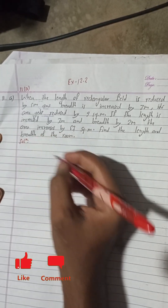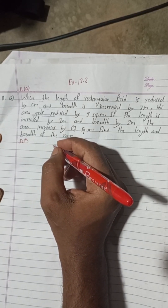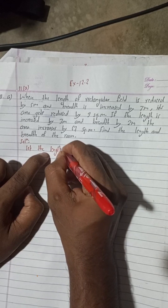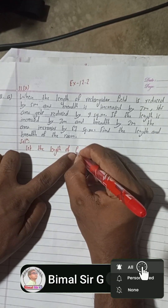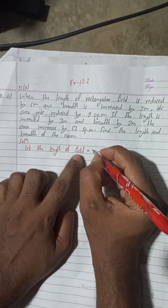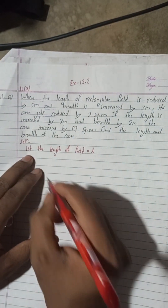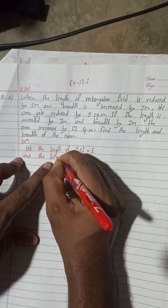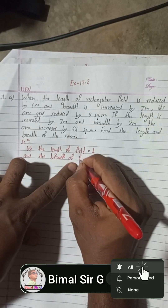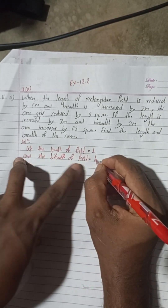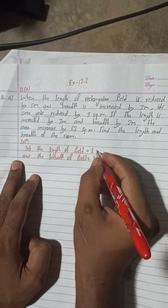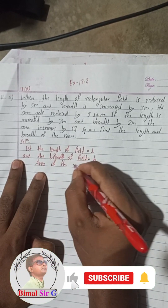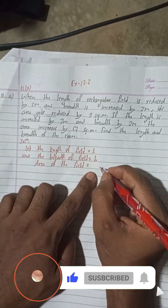Let's start the solution. We suppose: let the length of the field be L, and the breadth of the field be B. If length is L and breadth is B, then the area of the field will be L into B, that is, LB.